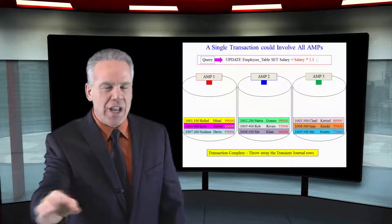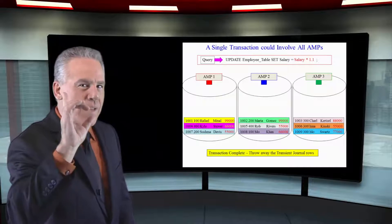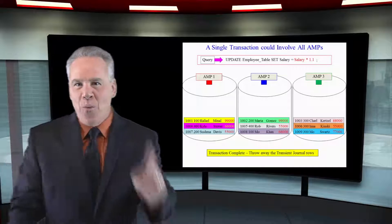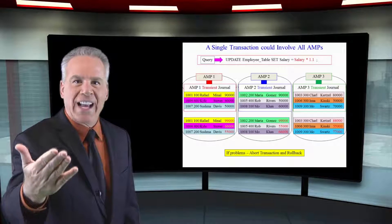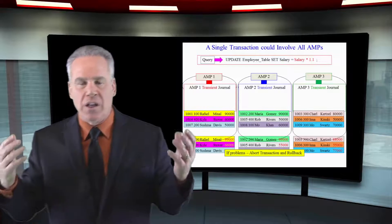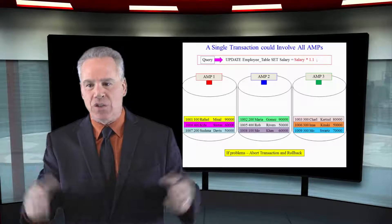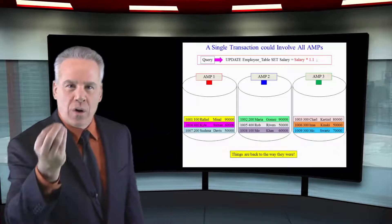If by chance one employee doesn't get it, one failure, if there's any glitch, they're going to roll back every single person because this transaction means everybody or nothing.